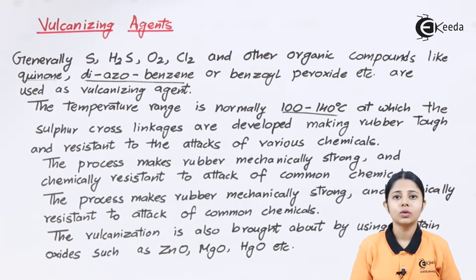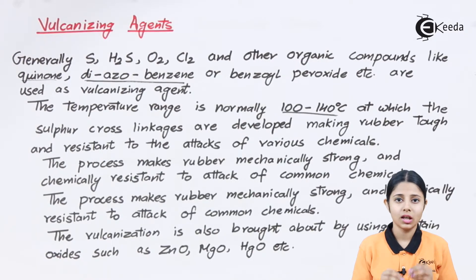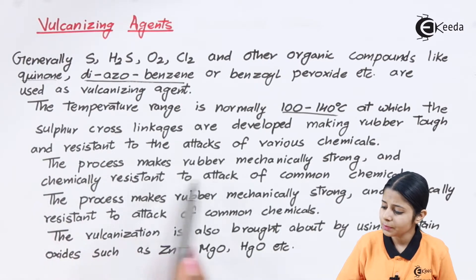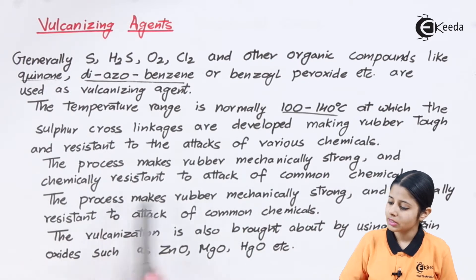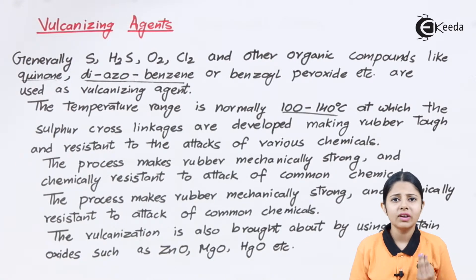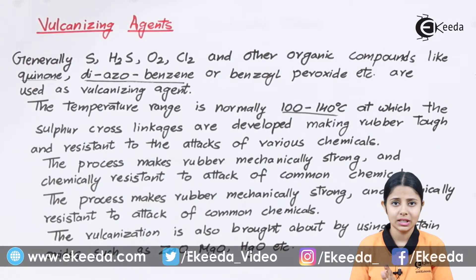This cross-linkage was started with the help of sulfur, and now it has moved on to various other vulcanizing agents as well. Cross-linkage is very easy when it comes to rubber — you just add sulfur to rubber and heat it at around 100 to 140 degrees Celsius. The sulfur gets imbibed within it and makes cross-linkages between the two linear structures of the rubber. The process makes rubber mechanically strong and chemically resistant. Natural rubber is not resistant to common chemicals, but adding sulfur gives it mechanical and chemical resistance.